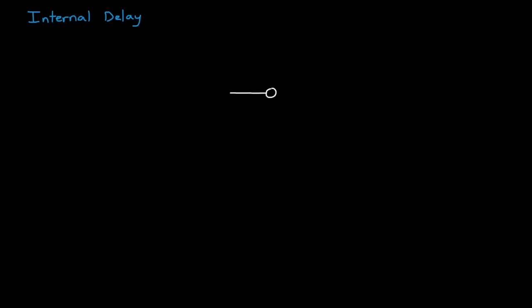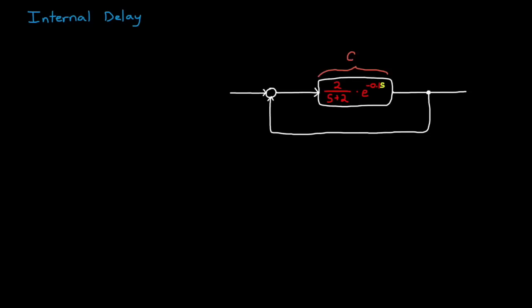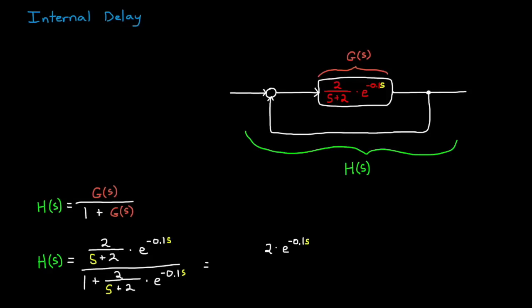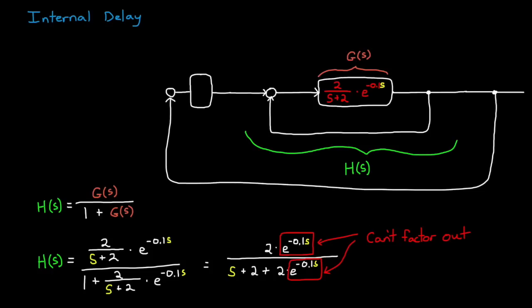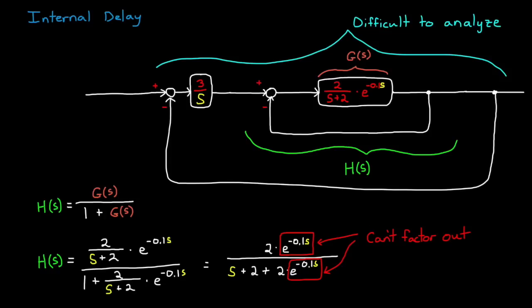Internal delay occurs with systems that have delay in an inner feedback loop. Let's look at this simple feedback system with delay in the forward path G of S. If you simplify the block diagram to create H of S of the whole feedback system, you can see that the delay term is present in both the numerator and the denominator, and you can't factor it out to just a single dead time delay. Now, if we wrap an outer loop around it, H of S is the open-loop transfer function, and this delay makes it difficult to analyze with the traditional control theory tools.